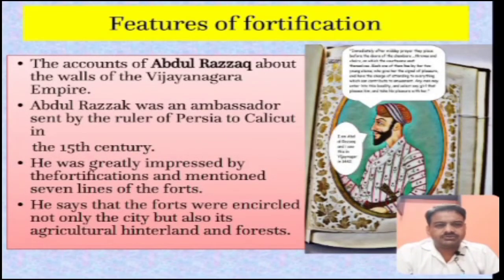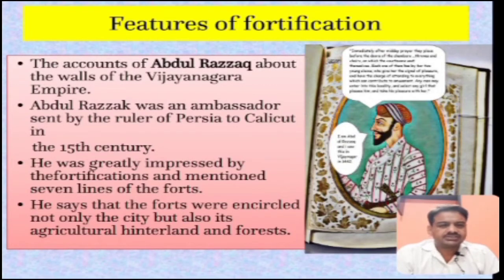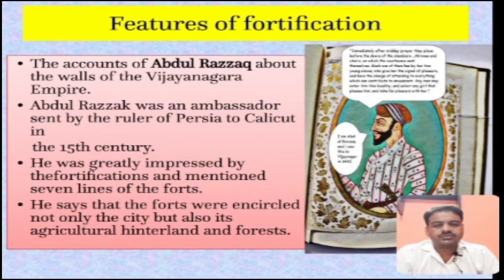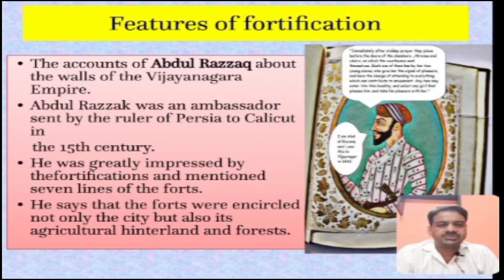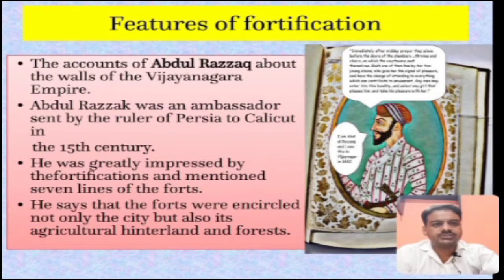So far we discussed about the Vijayanagara empire, its dynasties, what dynasties ruled over it, what led to its decline, its water resources, and how a canal was constructed from the Tungabhadra river and how rainwater was harvested. Now we will discuss one more important feature of the Vijayanagara empire - that related to its fortification, its defense.